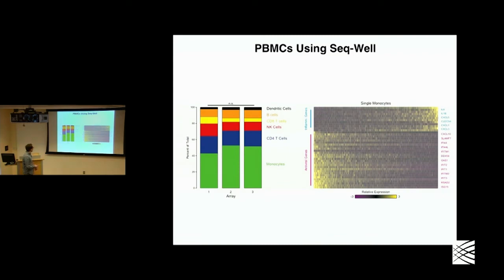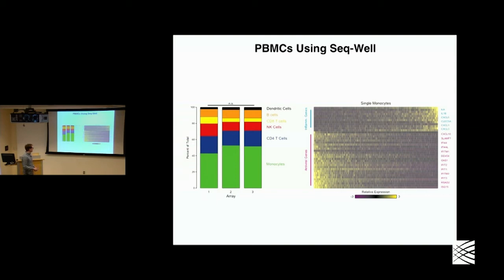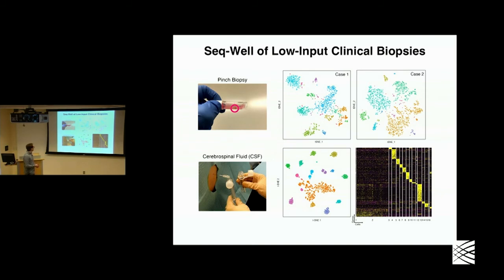We also applied this in triplicate and found good correlation between each of the three devices. On each of three replicate devices from the same sample, we were able to recover similar proportions of our cells. Further than that, we were able to identify different phenotypes within our monocytes — these axes of variation in inflammation and antiviral responses that we weren't able to appreciate before.